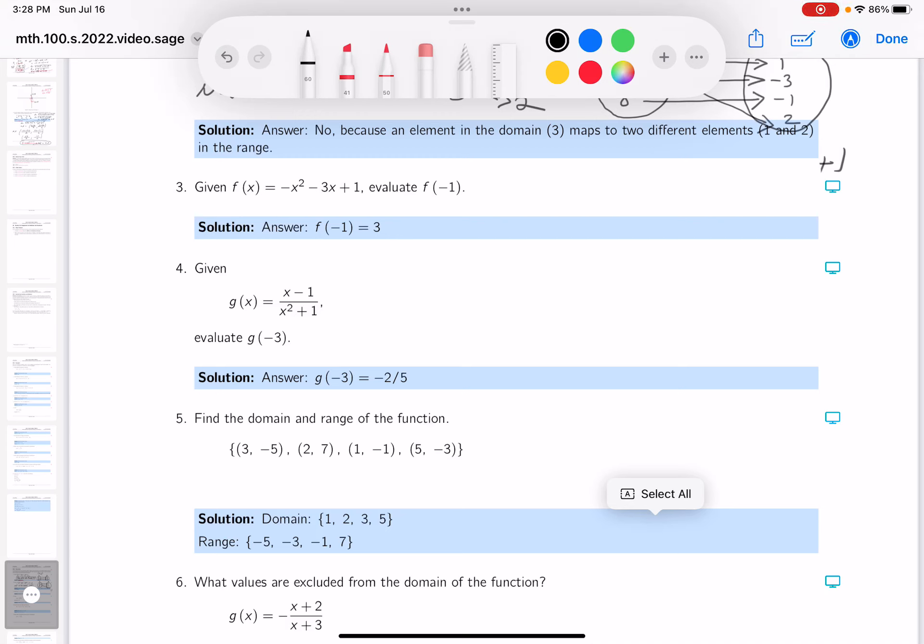Okay, we're on to number four. Looking at it, it says g of x is equal to this ratio. It's a rational function, and they want to know what g of minus 3 is.